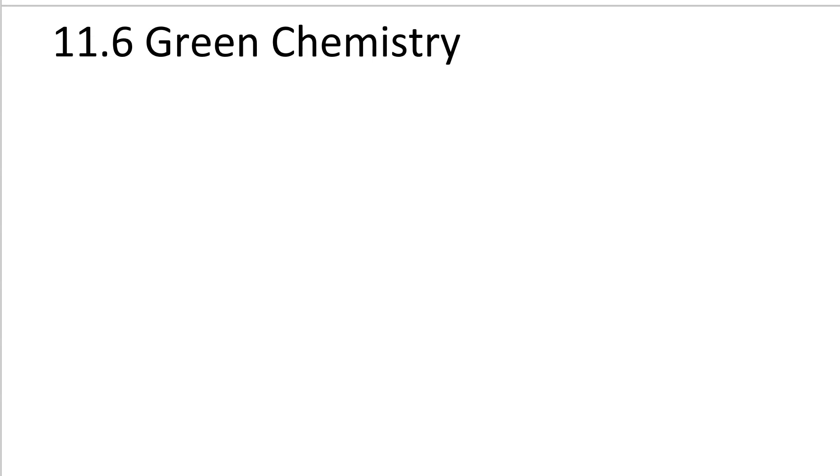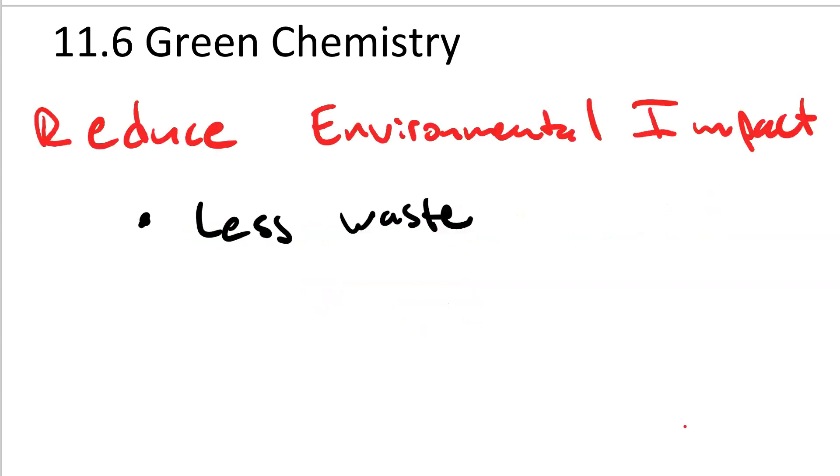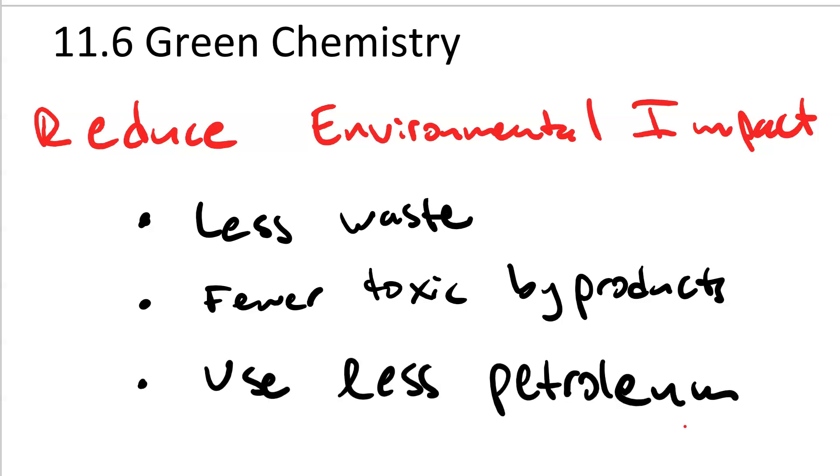Green chemistry. The main idea is to perform your activities in such a way that you reduce their overall environmental impact. So you want to optimize your yields to get less waste, you want to perform your syntheses in such a way that you produce fewer toxic byproducts, and you want to use less petroleum because that stuff is a limited resource and once it's gone it is gone.